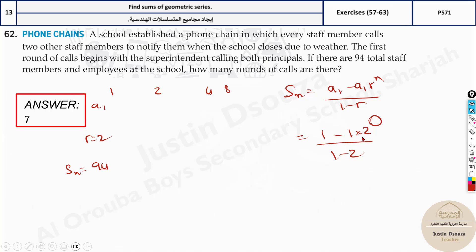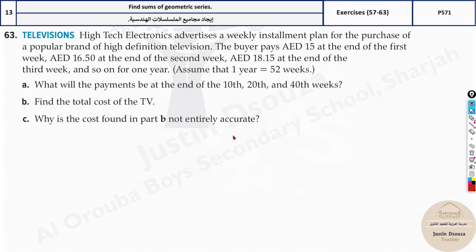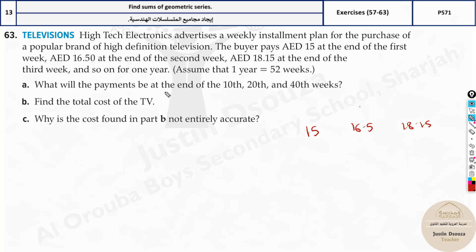The last problem: a high-tech electronics store offers a weekly installment plan for a high-definition TV. The buyer pays 15 dirhams at the end of week 1, 16.5 at the end of week 2, 18.15 at the end of week 3, continuing for one year (52 weeks). Find the payments at the end of the 10th, 20th, and 40th week.